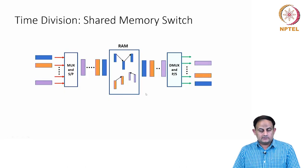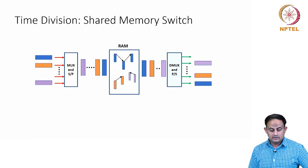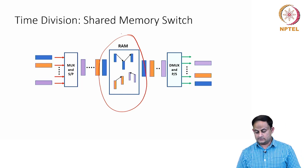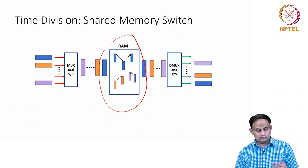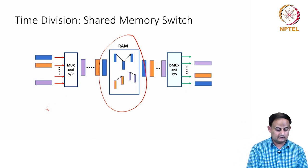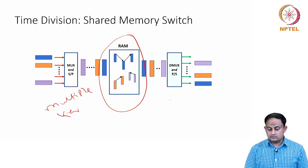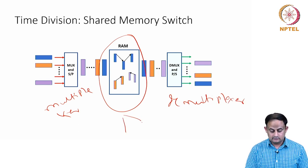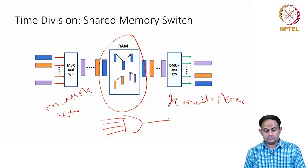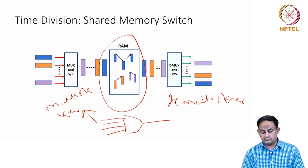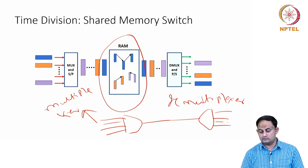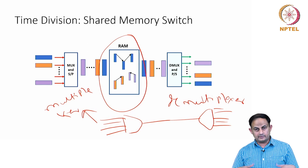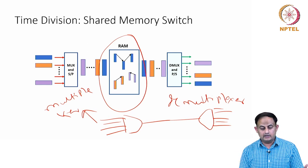The other way to implement a time division switch fabric is the shared memory switch fabric. The conceptual idea is a central RAM which is the central portion of the switch fabric, with two components: a multiplexer on the input side and a demultiplexer on the output side. The multiplexer takes many inputs and produces one output, while the demultiplexer receives one input and segregates it into multiple outputs.